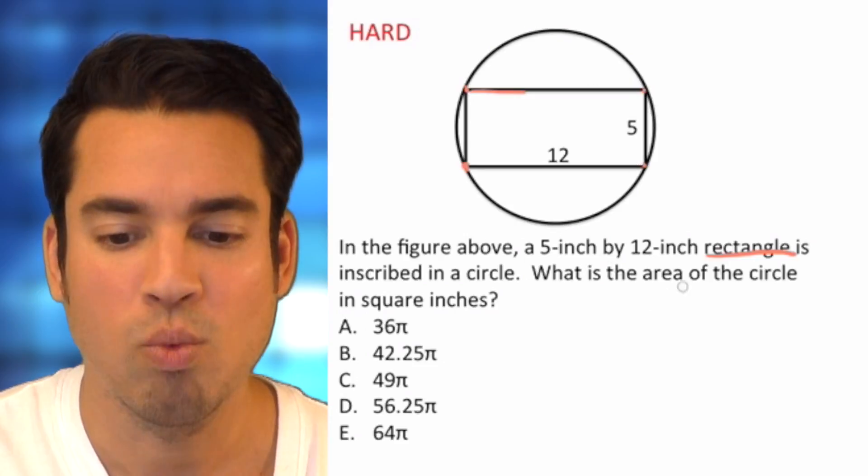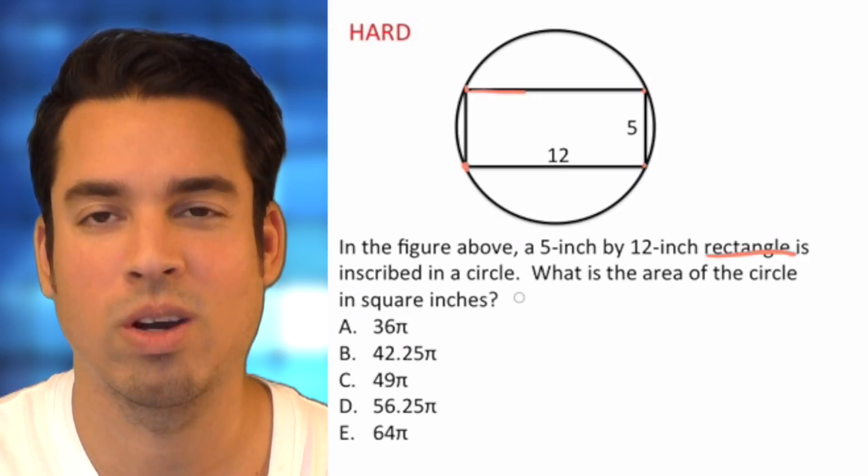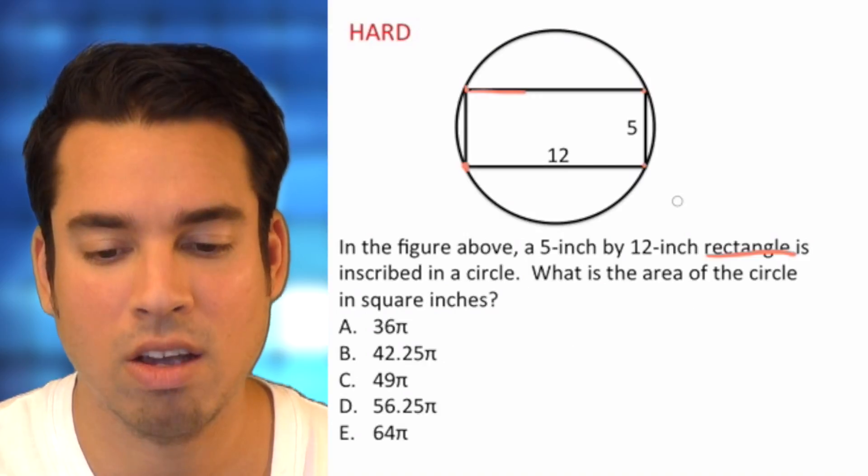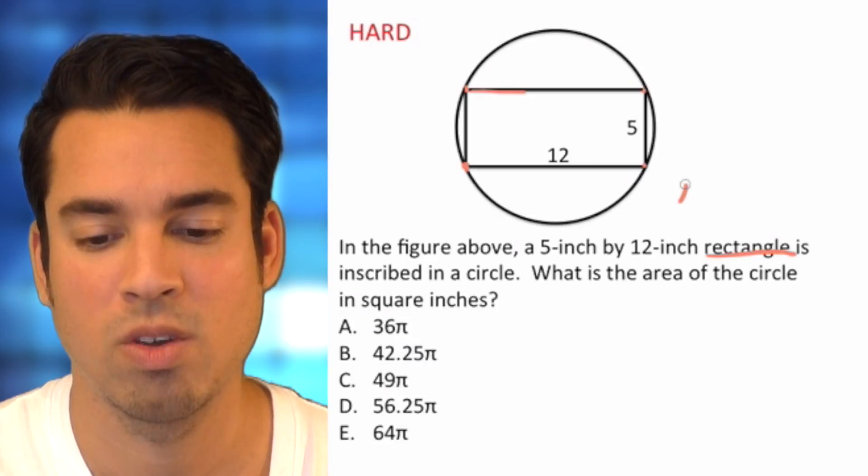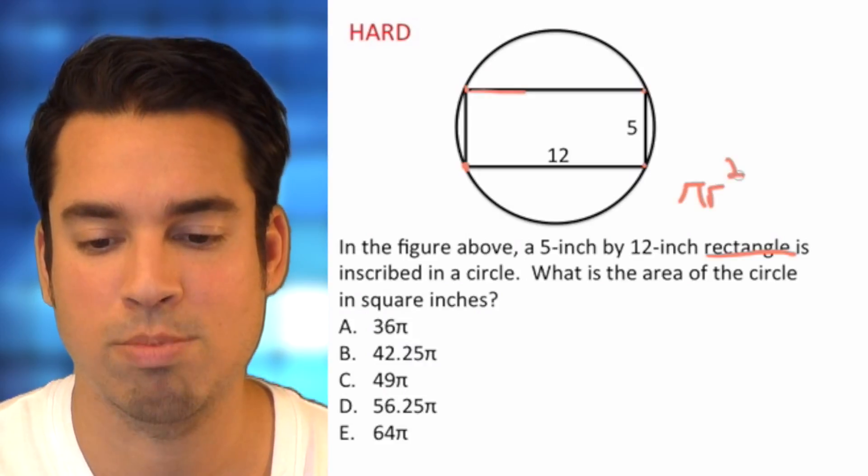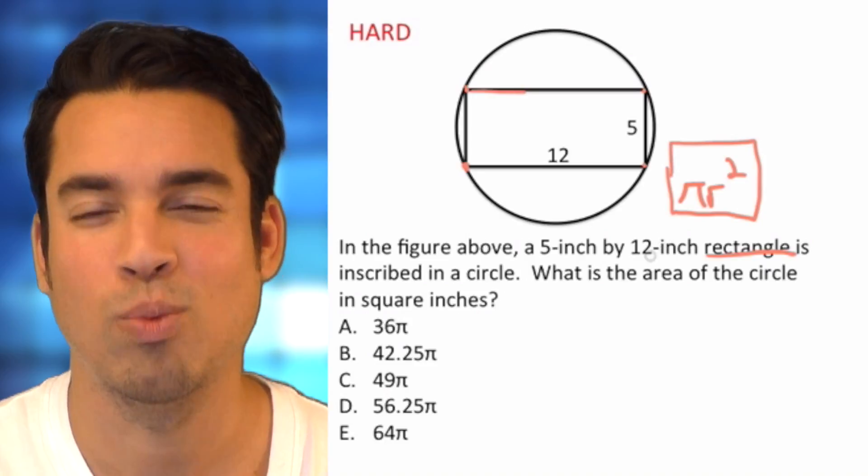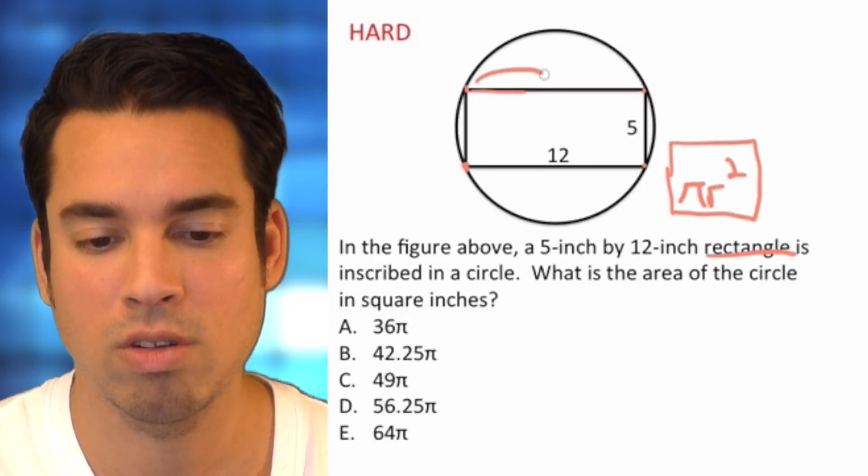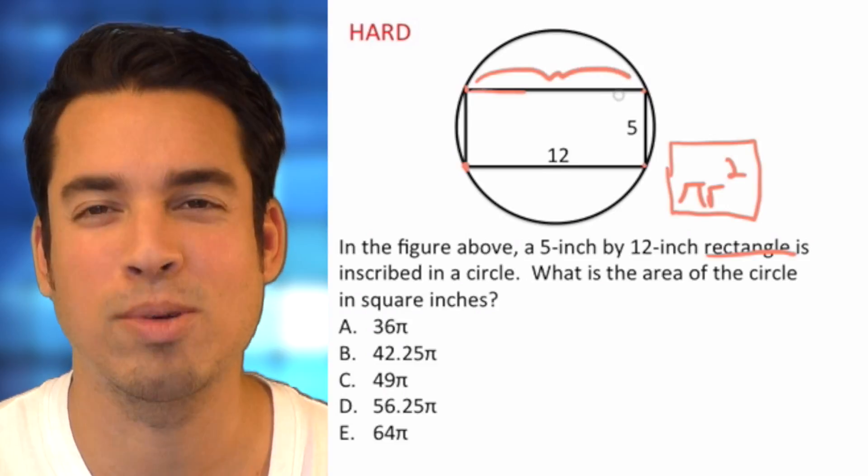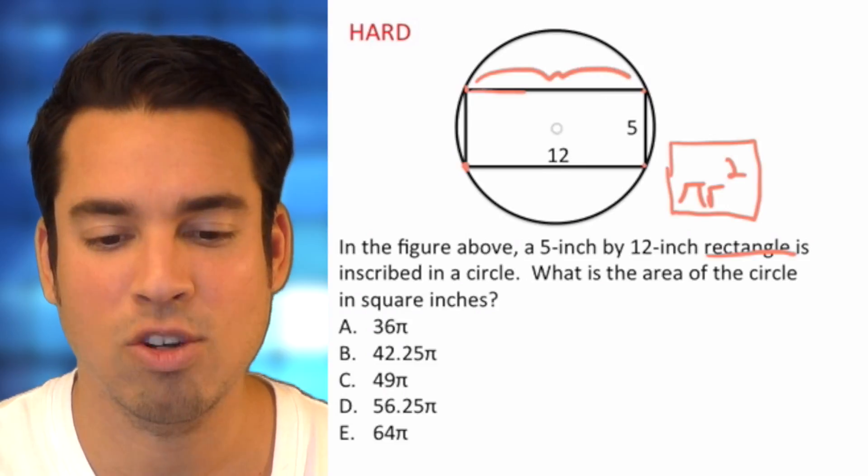So that means each of these corner points just touch the circle at one point. What is the area of the circle in square inches? Alright, if we want to calculate the area of a circle we must know the radius, because area is pi r squared. We don't have a radius value.